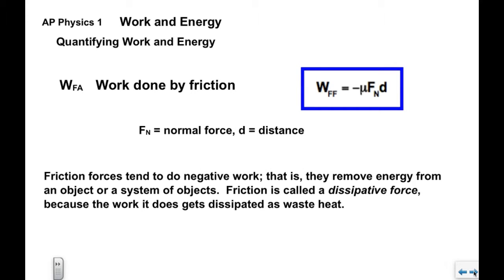Now we also have work done by friction. Work done by friction is equal to negative mu times F N times d. The negative sign indicates that friction typically does negative work. It removes energy from the system. F N is the normal force, d is the distance, mu we know already. Friction forces tend to do negative work. Friction, for that reason, is called a dissipative force.